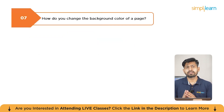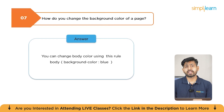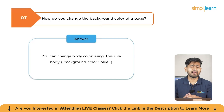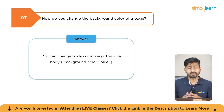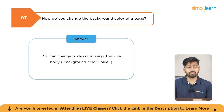How do you change the background color of a web page using CSS? You can change the background color using the body selector with the background-color property. For example, setting it to light blue will apply the color to the entire web page.